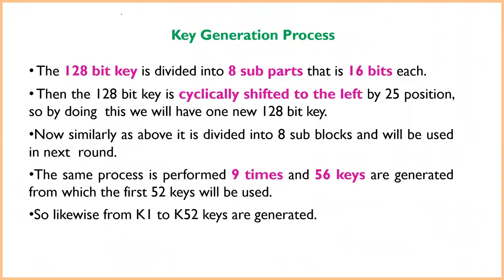The next important topic is the key generation process. The 128-bit key is divided into 8 sub-blocks of 16 bits each. This block division is performed 9 times in total to generate 56 keys, of which 52 subkeys are actually used in the encryption and decryption process.